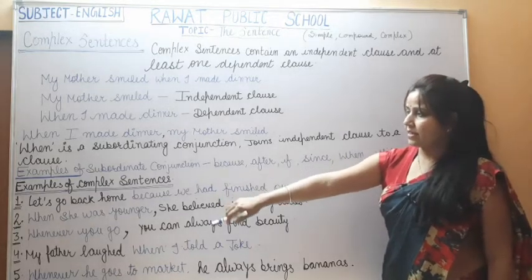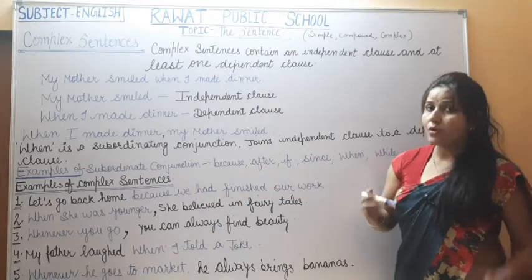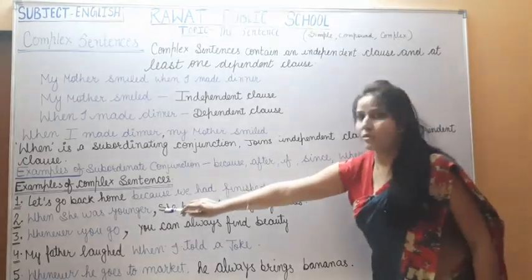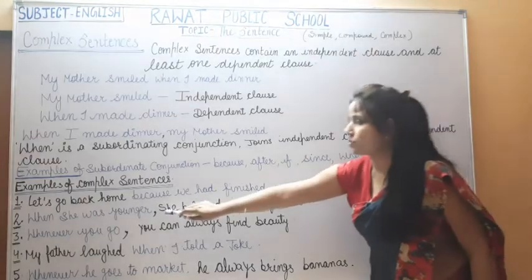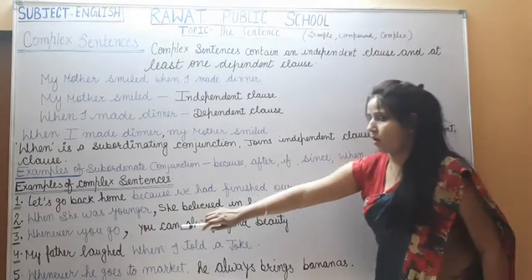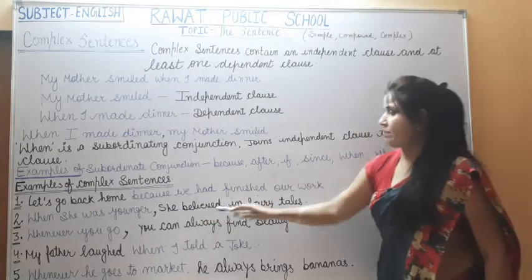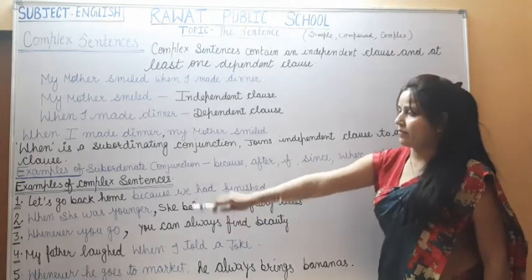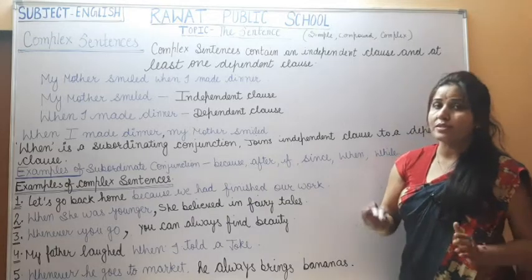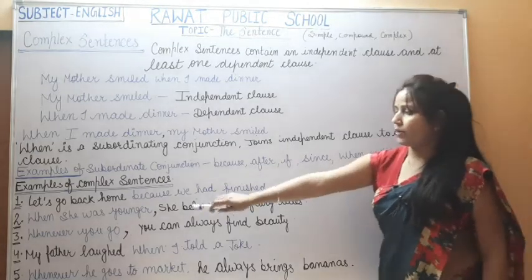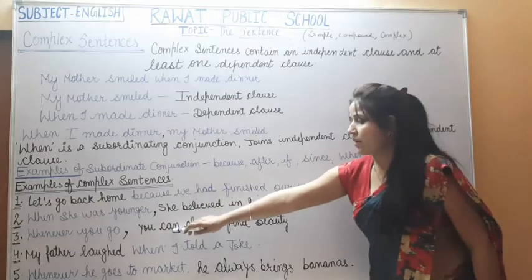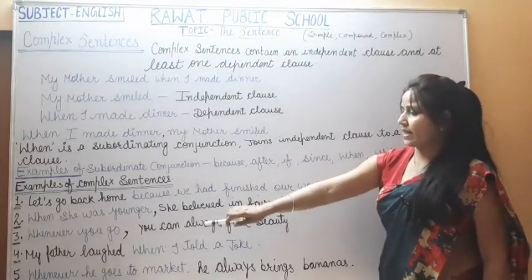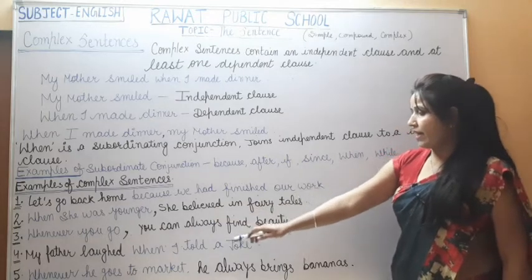Second: 'When she was younger, she believed in fairy tales.' Here 'when she was younger' is the dependent clause — written first — so a comma is placed after it. Then 'she believed in fairy tales' is the independent clause. Third: 'Whenever you go, you can always find beauty.' 'Whenever you go' is the dependent clause, so a comma follows it, then comes the independent clause.